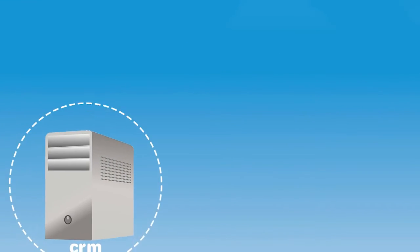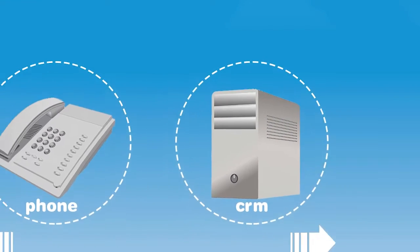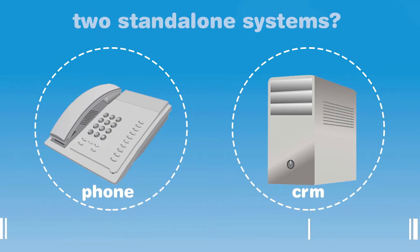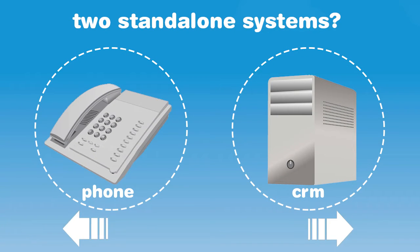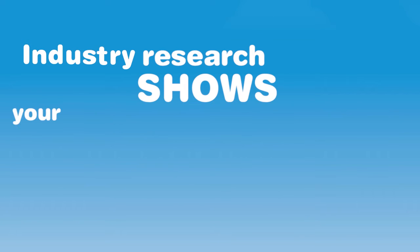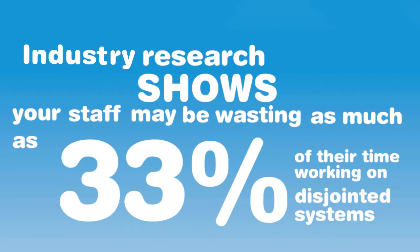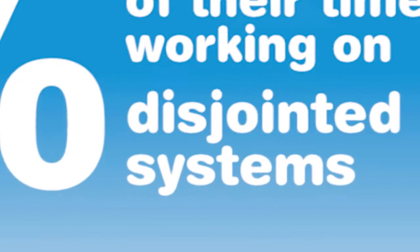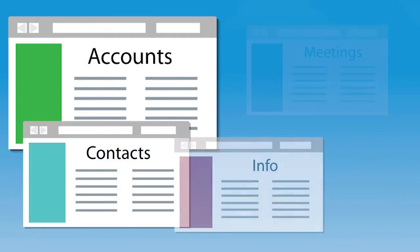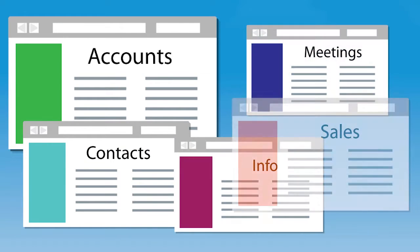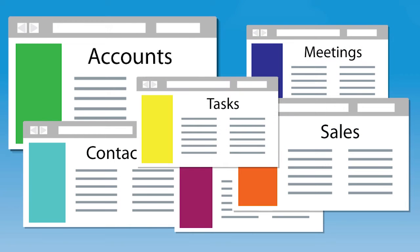Are your phone system and customer relationship management software two standalone systems where one hand does not know what the other is doing? Industry research shows your staff might be wasting as much as 33% of their time working on disjointed systems. Is it common to see them struggle with six different open windows, constantly rekeying the same information into several disparate systems?